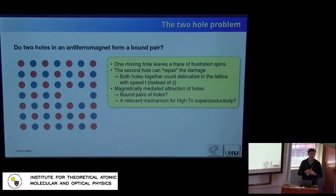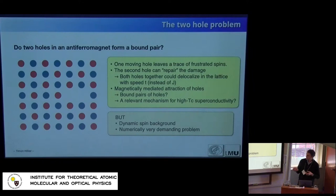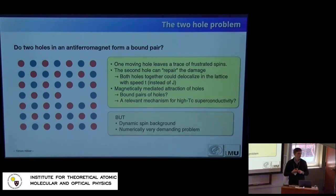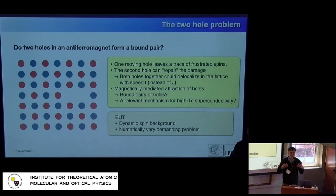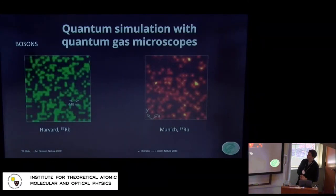This is a very simplified picture. This magnetically mediated attraction is only one of many processes happening in more realistic models, because the spin background is dynamic. As soon as you turn on spin-flip interactions, the whole situation becomes very hard to calculate numerically. It's famously known that doping introduces sign problems into quantum Monte Carlo calculations, so even the situation with two holes is something one can't brute force calculate. But that doesn't mean this binding mechanism doesn't exist — this is what we set out to experimentally prove.